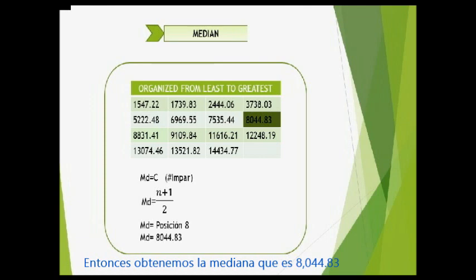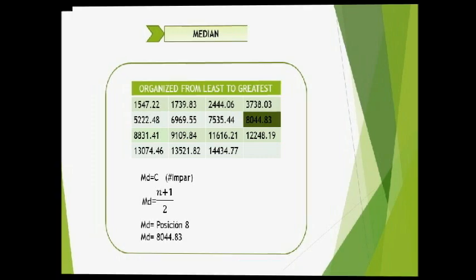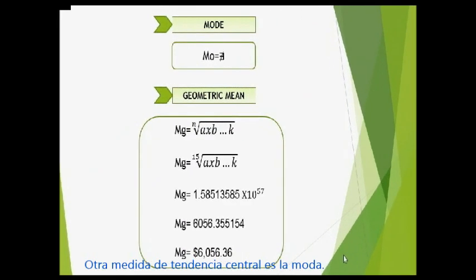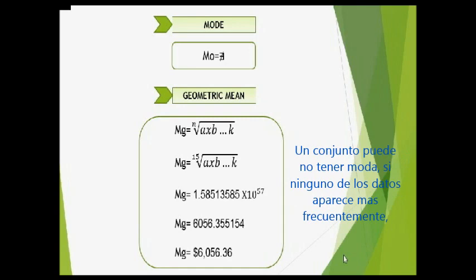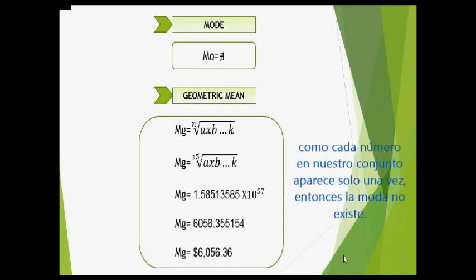So we obtain the median, which is $7,044.88. Another measure of central tendency is the mode. The mode is the number that appears most frequently in a data set. A data set may have no mode if none of the values appear more frequently than others. Therefore, when each number in our set appears only once, then there is no mode.